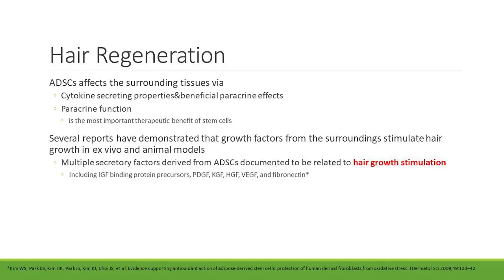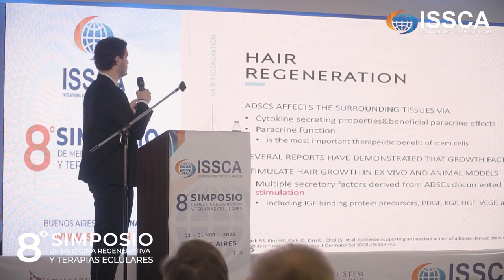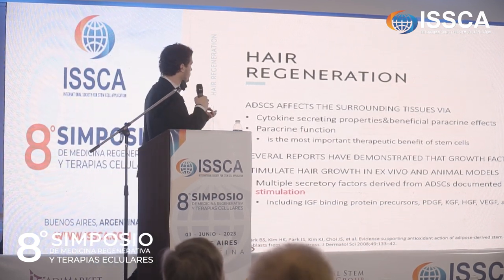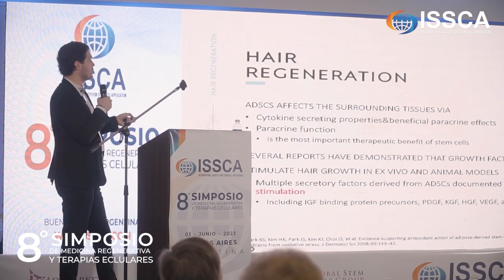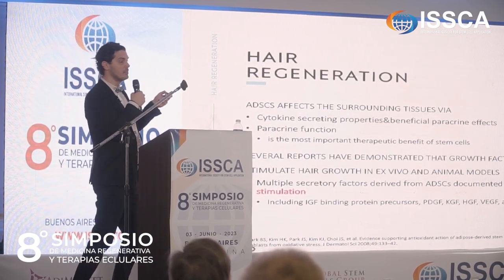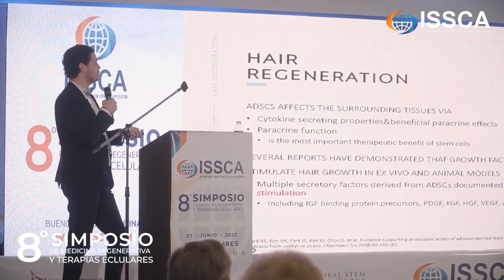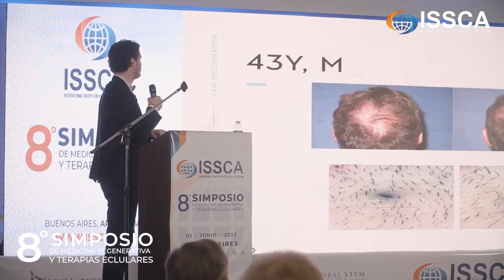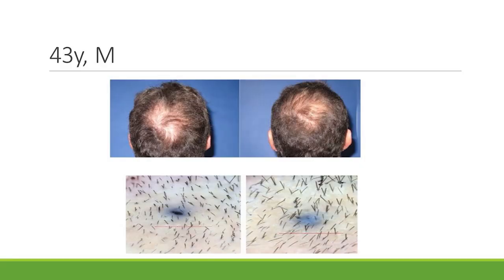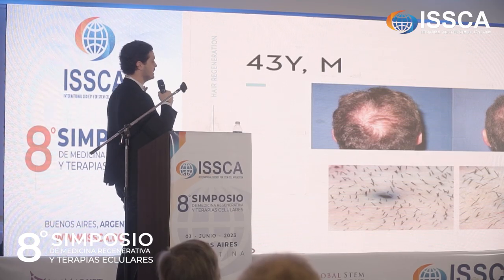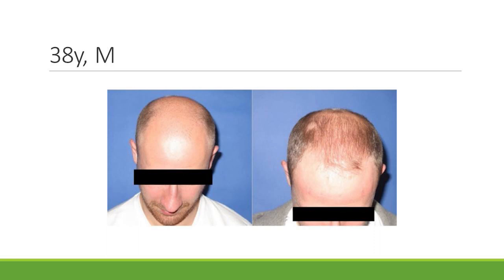We can also use stem cells for hair regeneration — not hair transplant, but by using adipose tissue-derived stem cells we can activate surrounding tissues. The cytokines they secrete have beneficial paracrine effects on hair follicles, and this paracrine function is the most important therapeutic effect of stem cells. This is a 43-year-old male patient — after just two sessions of SVF, as you can see, the patient is happy with the results.